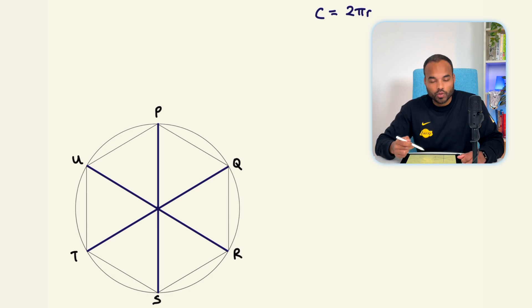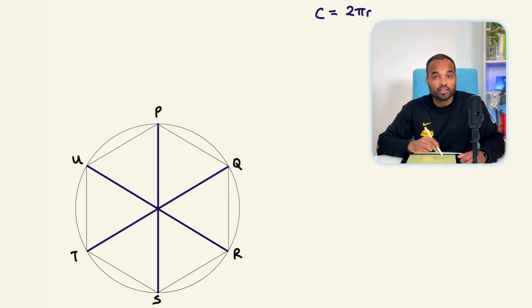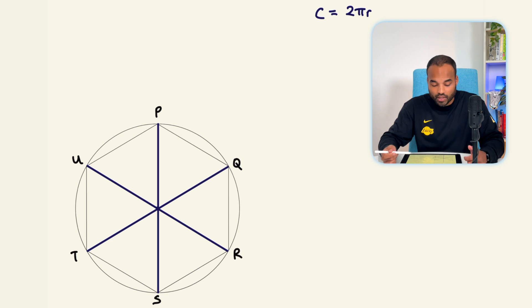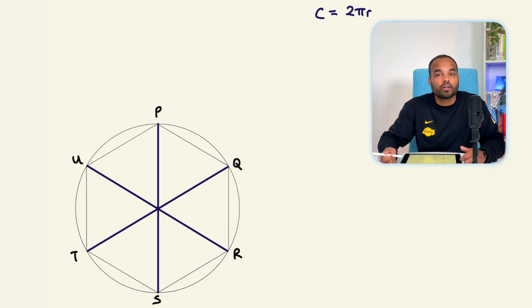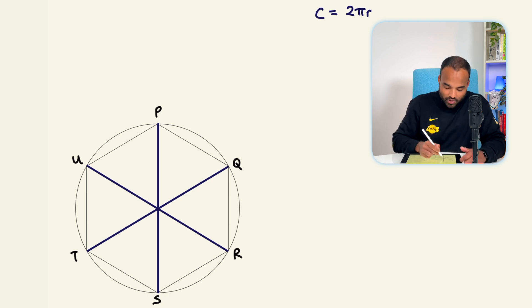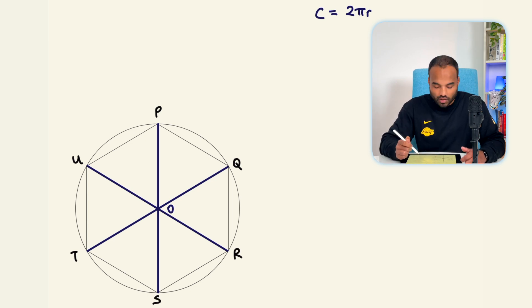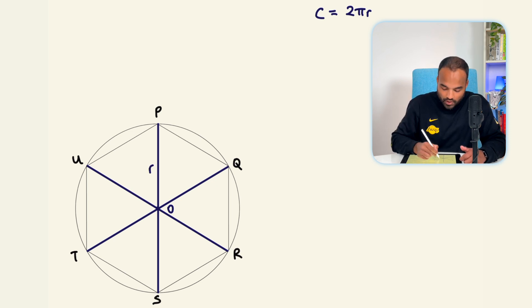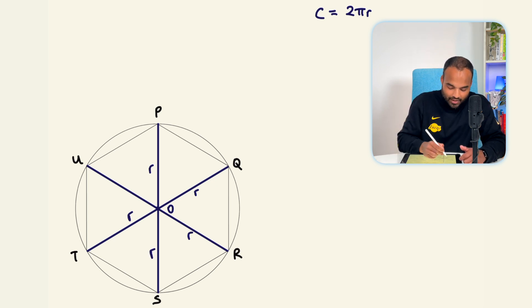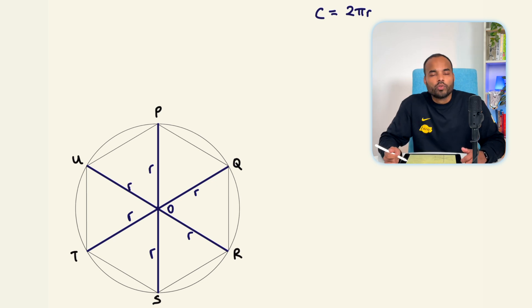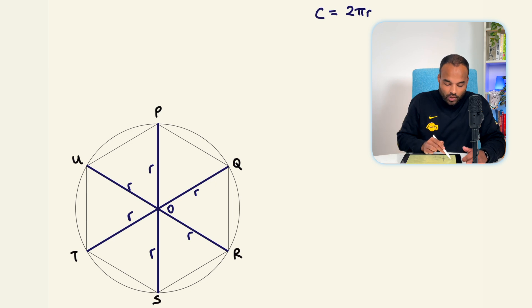For the inner hexagon PQRSTU, we need the lengths PQ, QR, RS, and so on. I've drawn a line from the center of the circle out to each of those vertices. Since PQ, QR, etc. are all chords, their endpoints lie on the circumference. Drawing lines from the center O to the circumference at all those points, we form a set of radii — OP, OQ, OR, OS, OT, and OU are all equal to r.